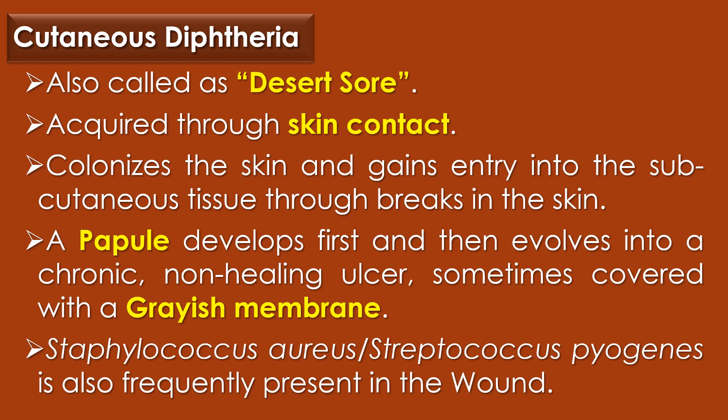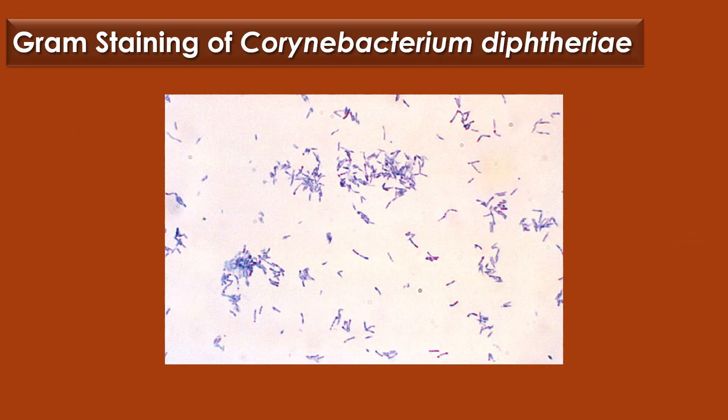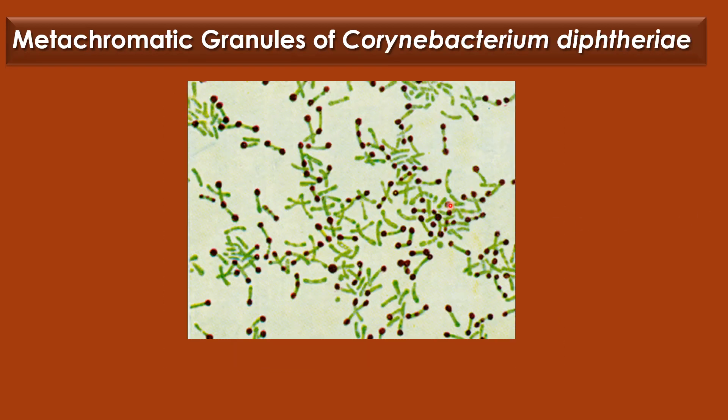Laboratory diagnosis of Corynebacterium diphtheriae. The first method is microscopic examination. Under gram staining, Corynebacterium diphtheriae is observed as violet-colored gram-positive rods with angular and palisade arrangements that create a Chinese character pattern. In the motility test, non-motile cells are observed. In metachromatic granule staining, bluish-black metachromatic granules are observed. This image shows the gram staining of Corynebacterium diphtheriae. This image shows the metachromatic granules — the bluish-black contents are the metachromatic granules.